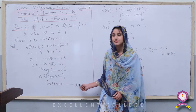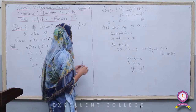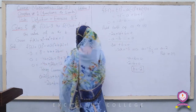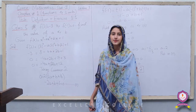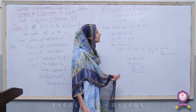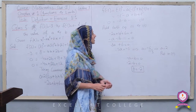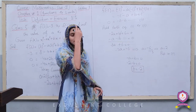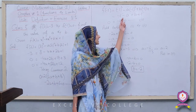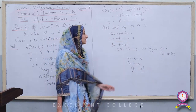Now using f(-1) = 0, we put x = -1 into the function. (-1)³ - a(-1)² + b(-1) + 1 = 0, which gives -1 - a - b + 1 = 0. The -1 and +1 cancel out, leaving -a - b = 0. This is Equation 2.